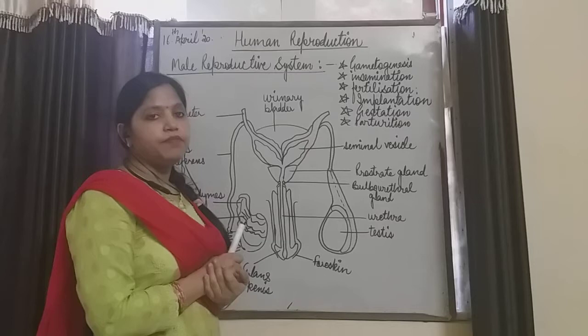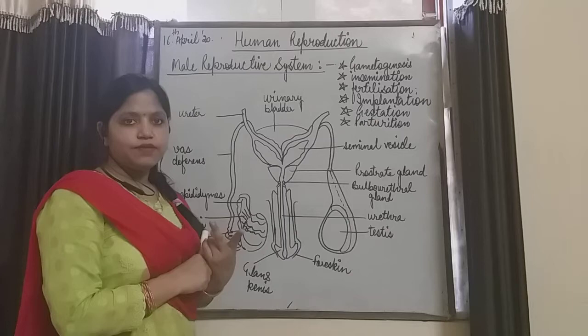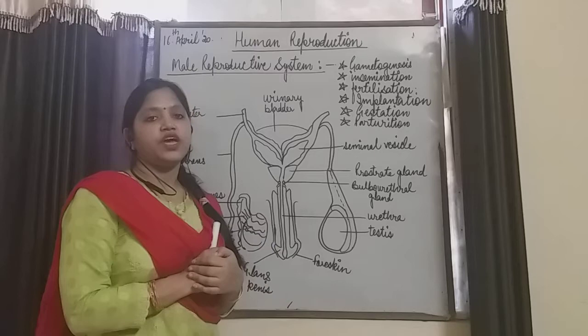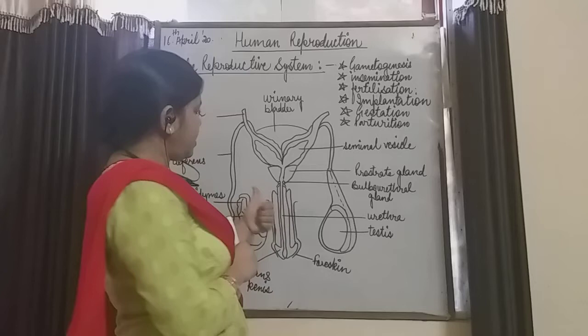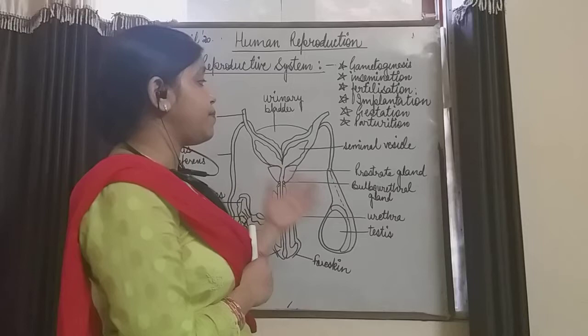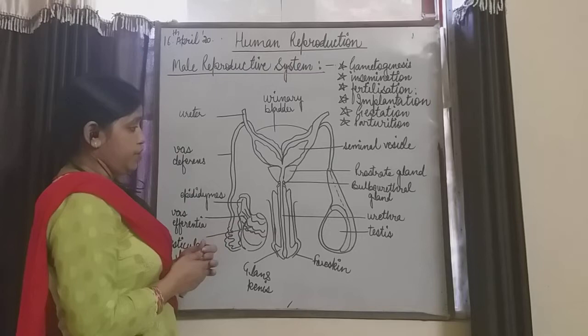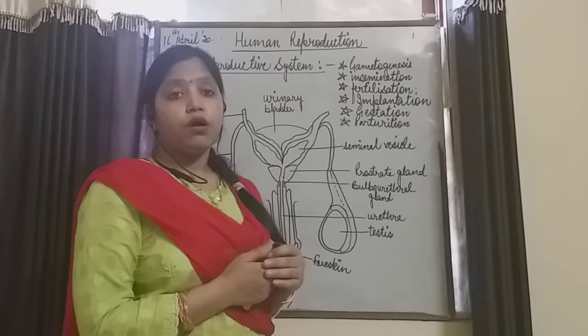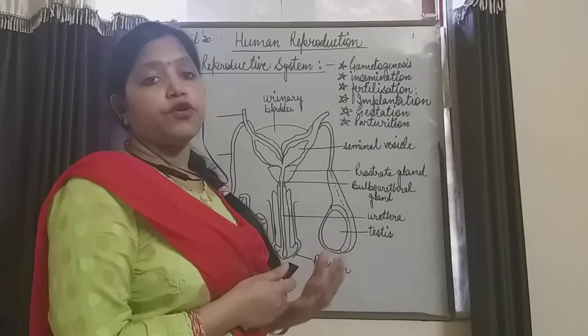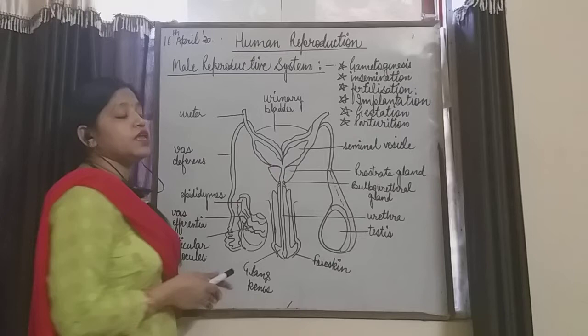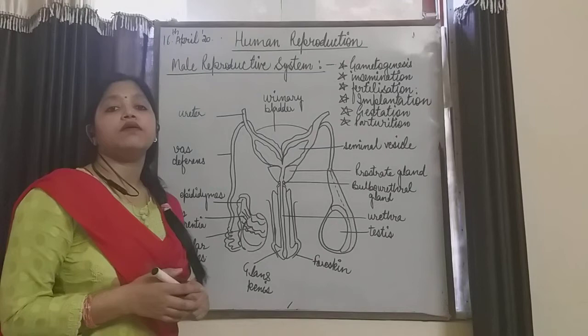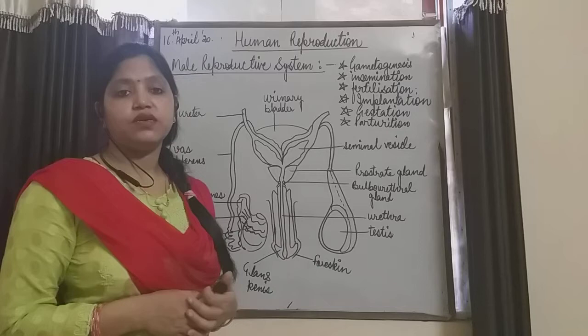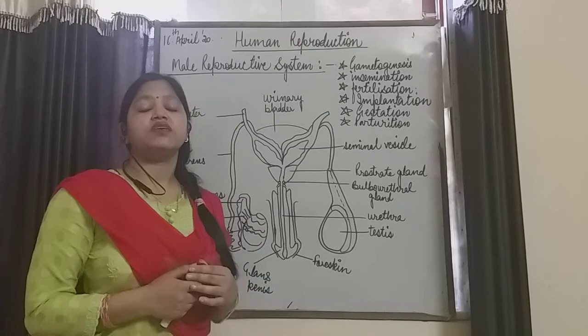Here we are discussing all the parts of the male reproductive system. We have two diagrams in NCERT — the front view and the side view. The primary organs in which the formation of male gametes takes place — in the human male, the primary organs are the testes. A pair of testes are present in the abdominal cavity.